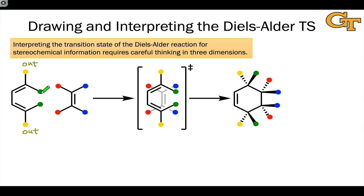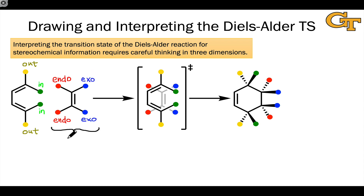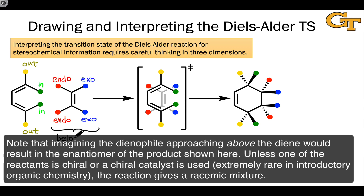The groups inside the C shape, colored green, we'll refer to as 'in.' In the dienophile, the groups in red are pointed toward the diene as the two reactants approach and end up underneath the diene in the transition state — we'll call these groups 'endo.' The groups in blue point away from the diene in the transition state, and we'll refer to these as 'exo.' To depict the transition state, we take the dienophile below the plane of the screen and move it underneath the diene, with new sigma bonds forming at the dotted lines.